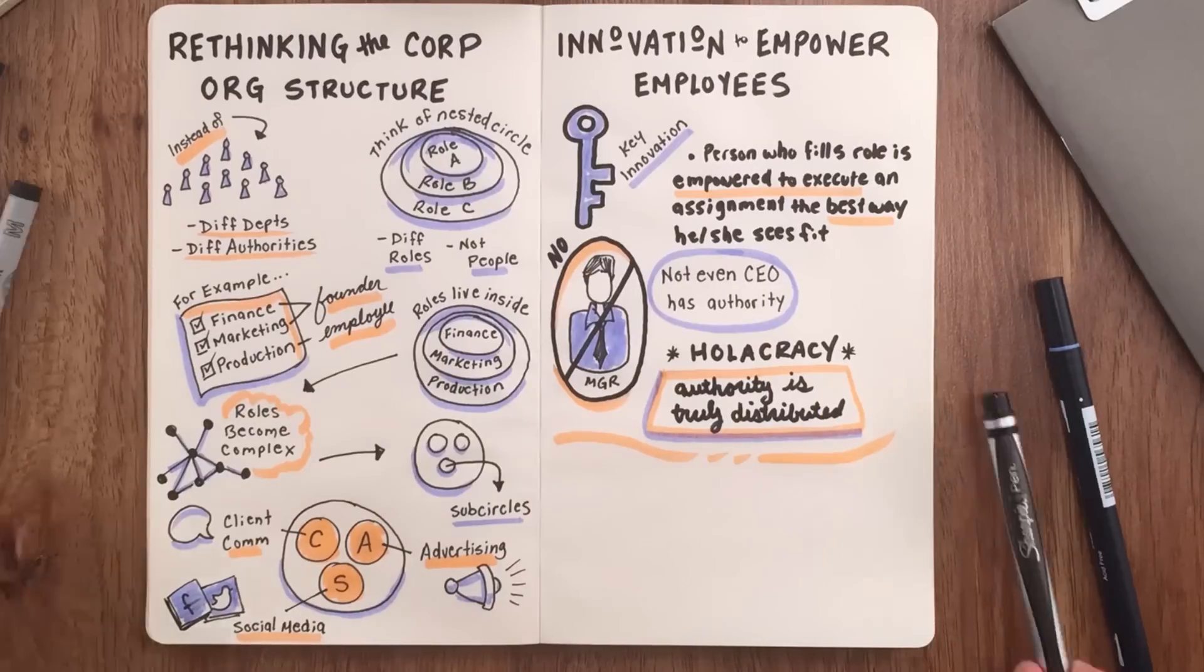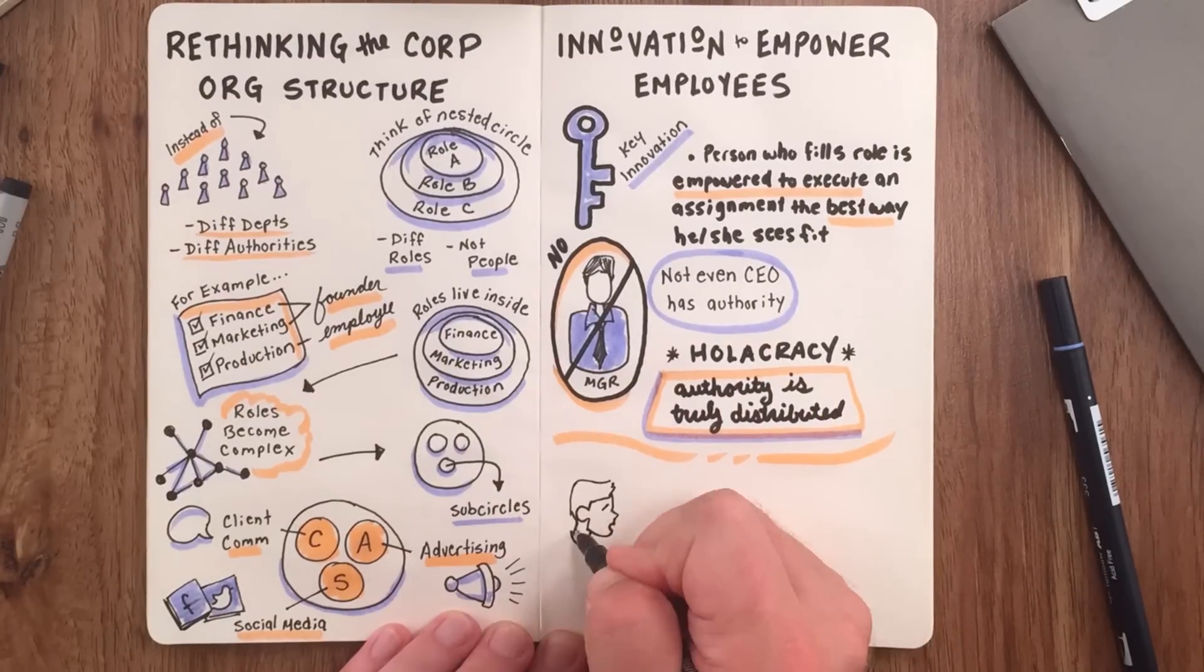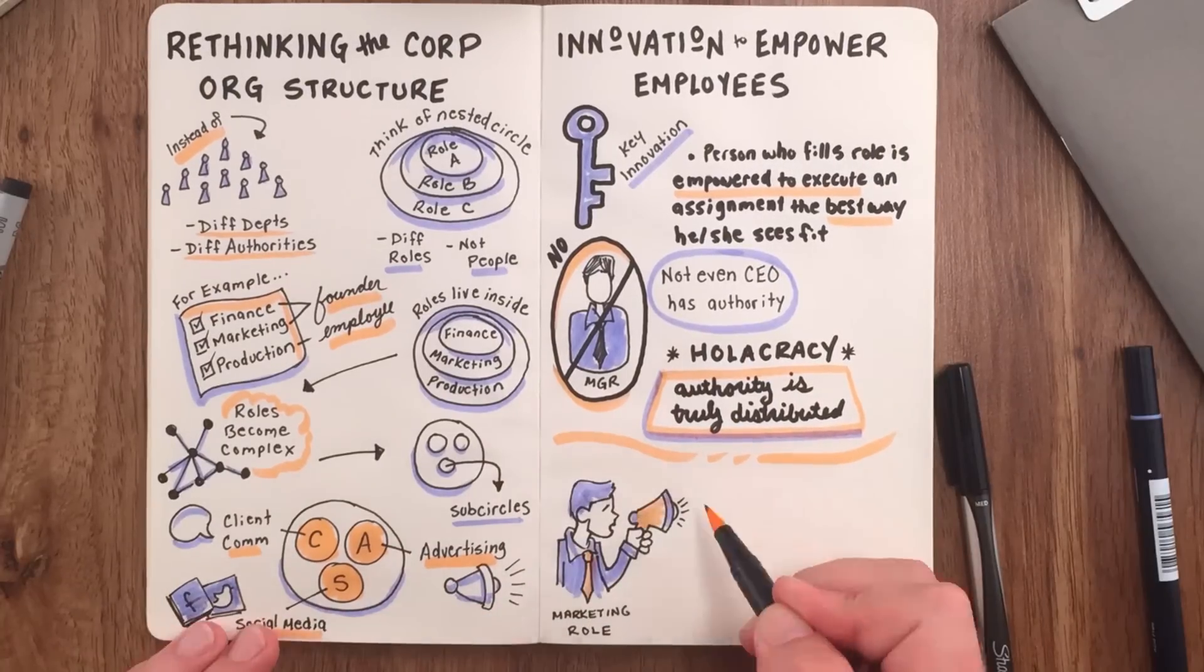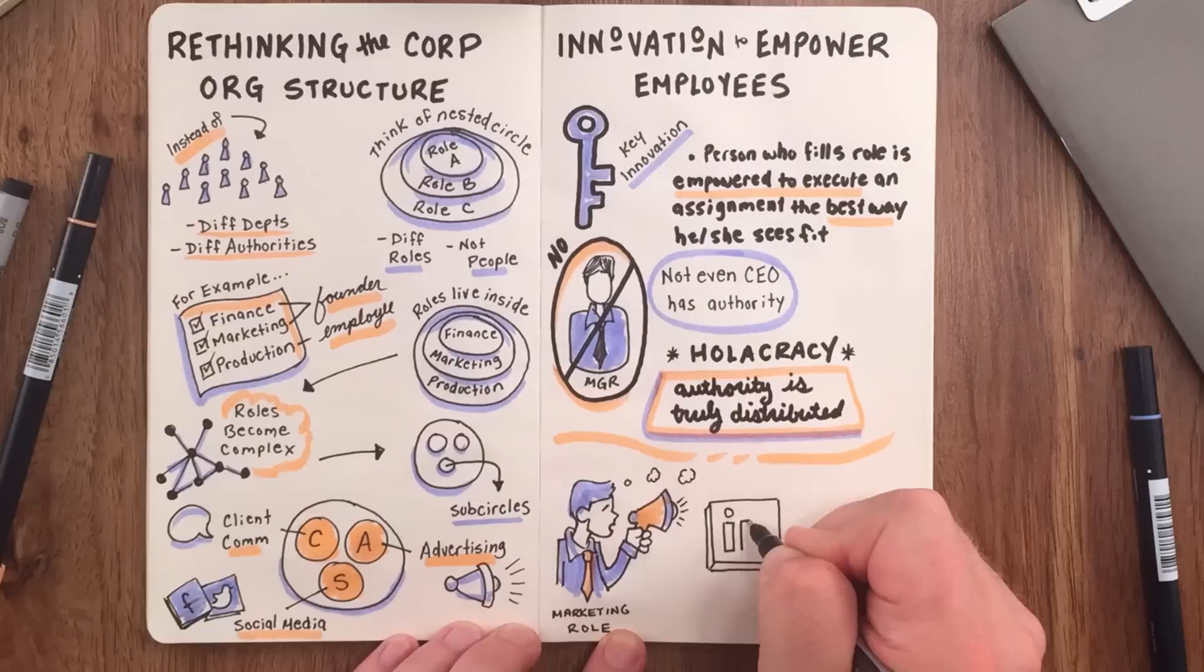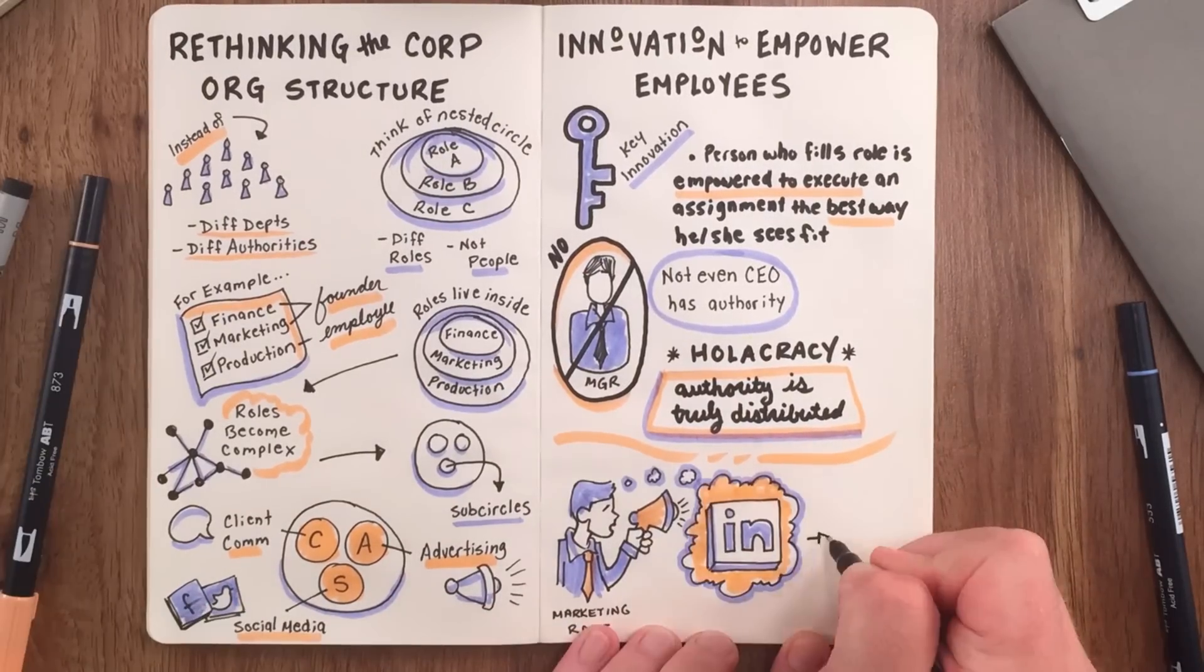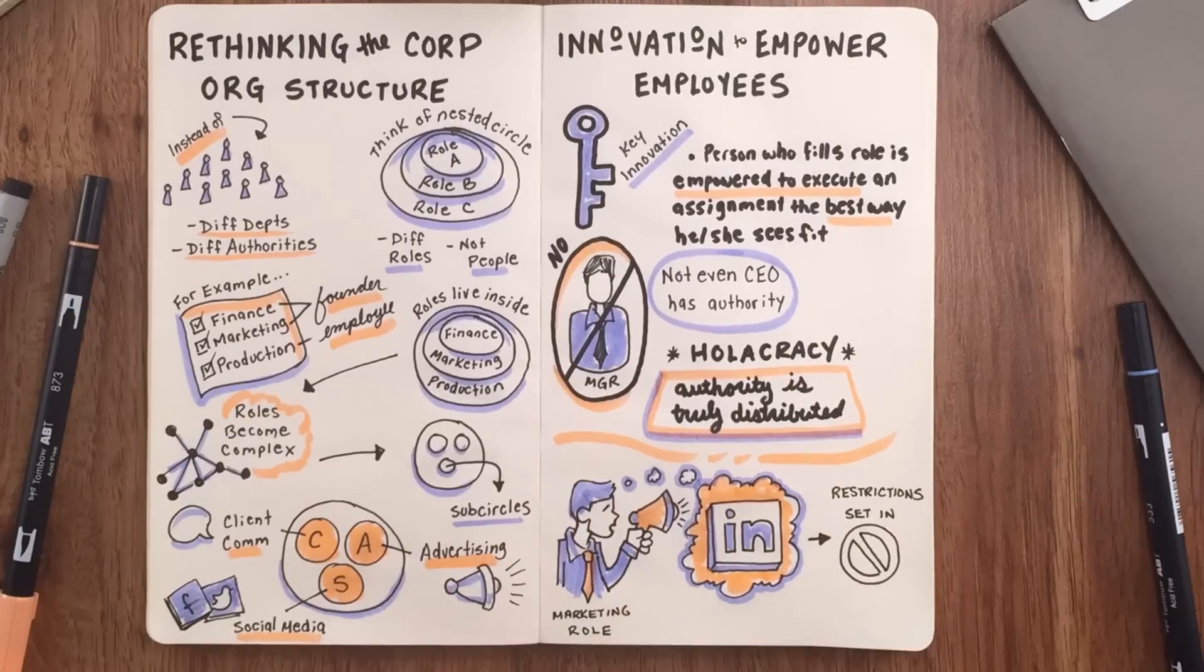For example, if the person filling the marketing role in an organization wants to create a LinkedIn page for the company, he is free to do so without asking anyone's permission. The only limitation is from any restrictions set in governance. For example, there could be a rule regarding the use of the company's logo that he needs to adhere to.